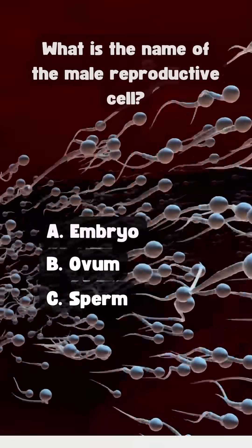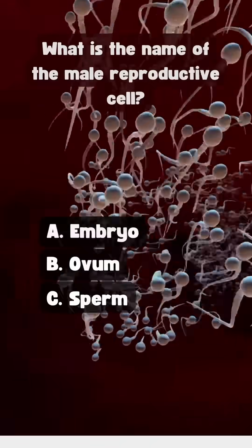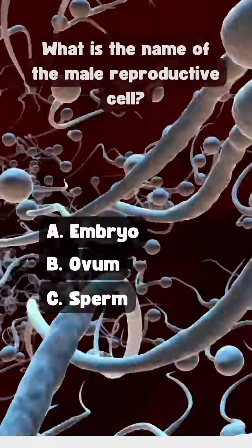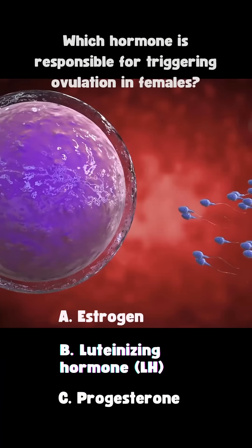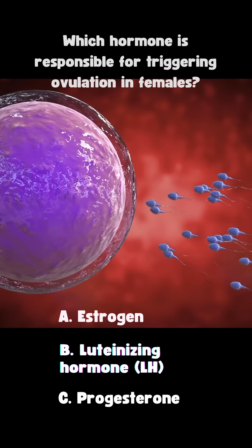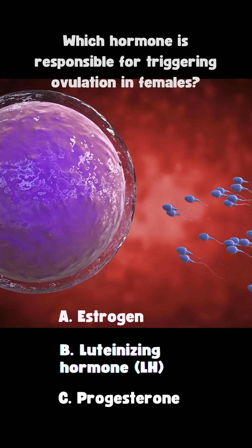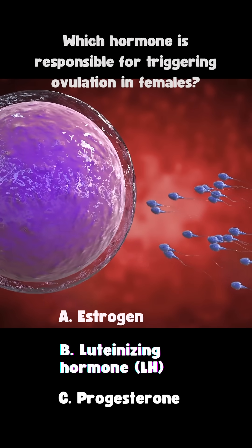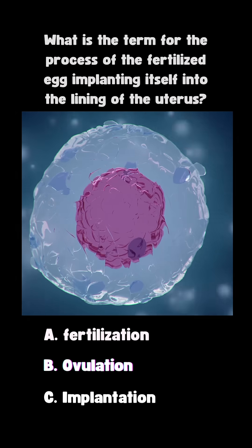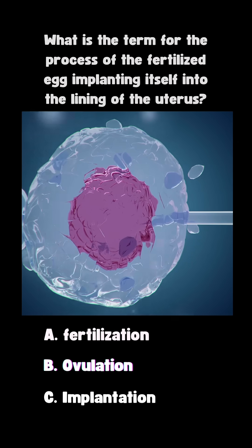What is the name of the male reproductive cell? What is the term for the process of the fertilized egg implanting itself into the lining of the uterus?